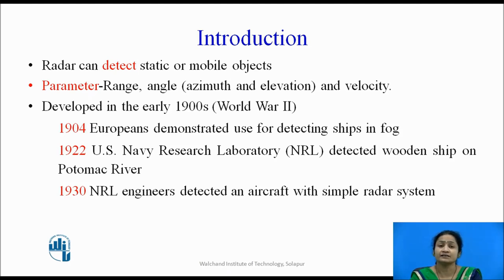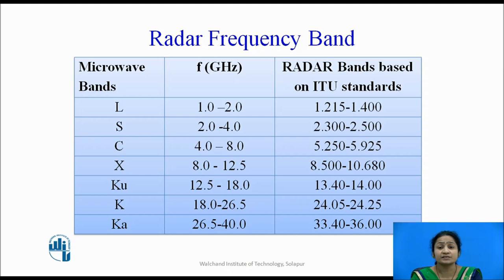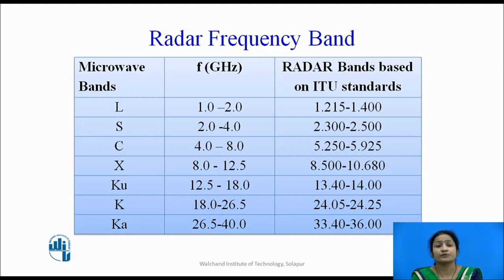The radar was developed from the 1940s after World War II. What is the frequency band? We know that microwave frequencies are used, but what is the specific frequency band? Because the microwave frequency range is also very vast. The frequency bands standardized for radar systems range from 1 gigahertz to 40 gigahertz, as assigned by the ITU standards.